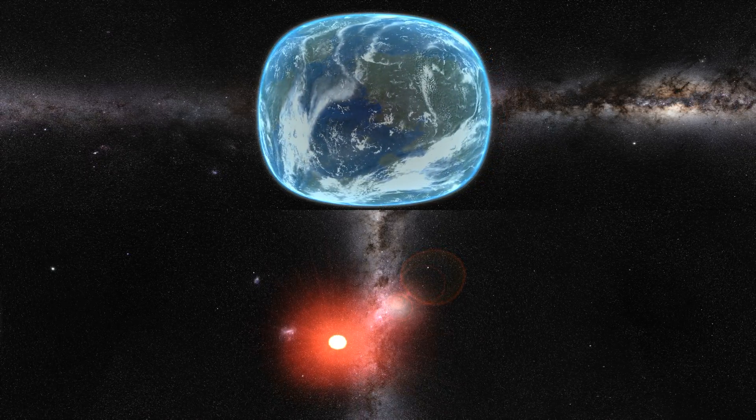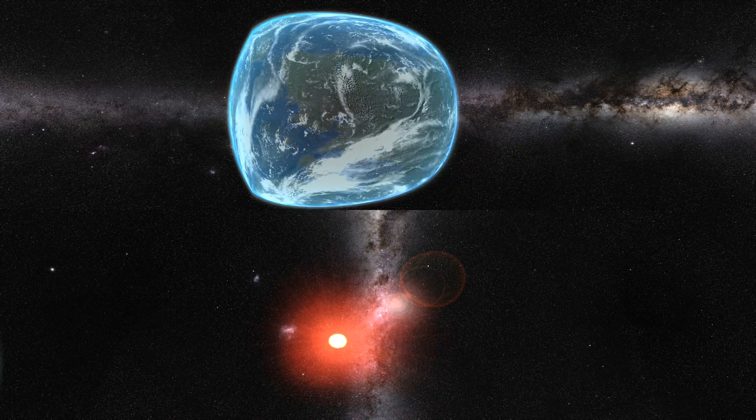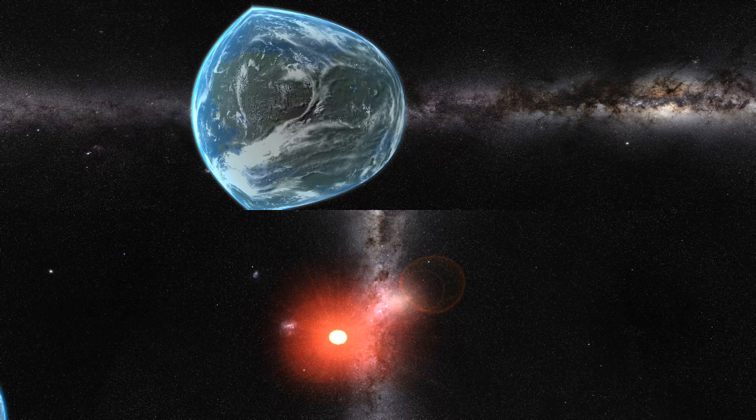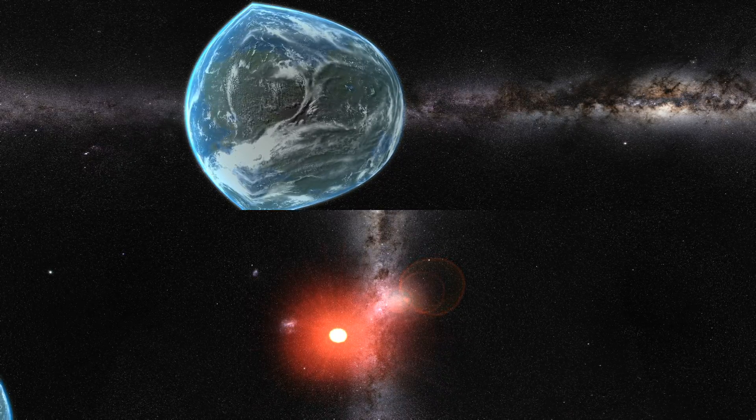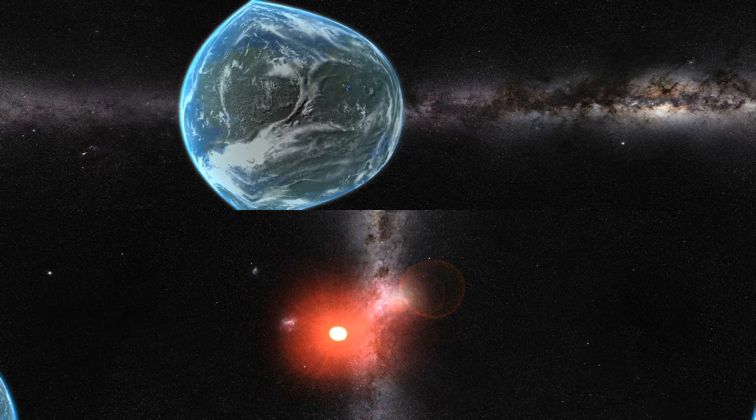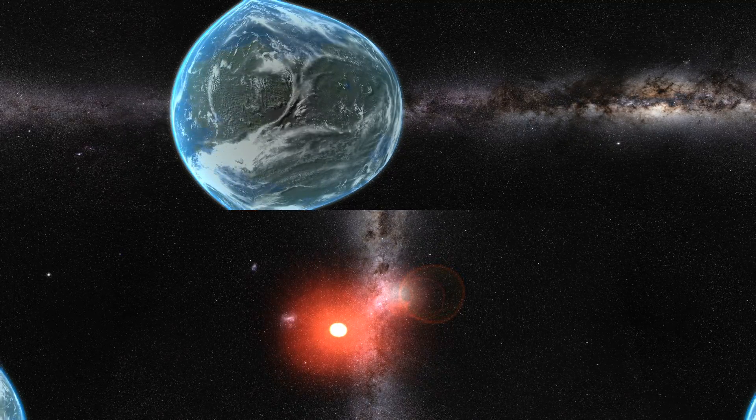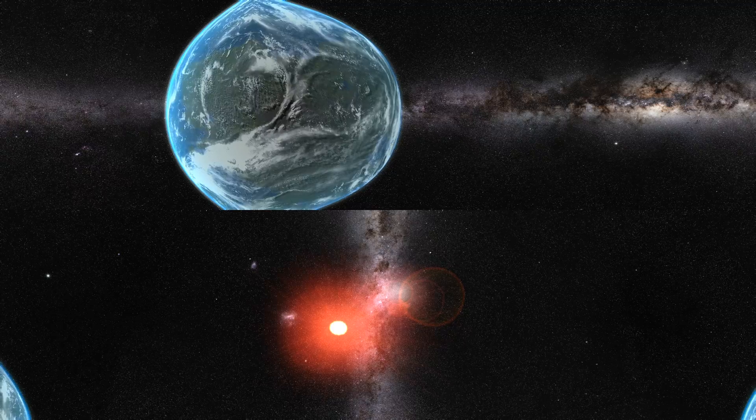Because red dwarfs are so dim, their habitable zones lie quite close. Kepler hunted for planets using the transit method, monitoring stars for tiny brightness dips caused by planets crossing their faces from the spacecraft's perspective.